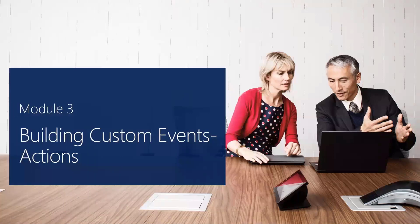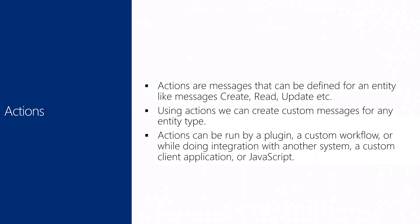This is about building custom events, which are known as actions — the fourth type of process. Actions are nothing but custom events or messages that can be defined for an entity. By default in your CRM system, every entity has a set of events you can see on the ribbon: create, update, delete, read, write, etc. If you want to create a custom event for an entity, you can do that with actions. Once created, you can call it by a plugin, by workflow, or from JavaScript.